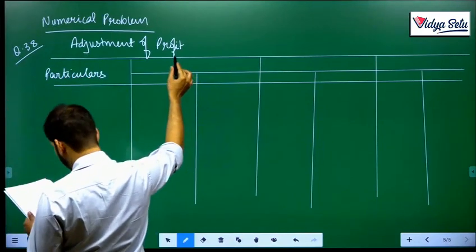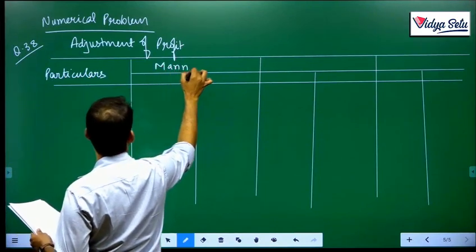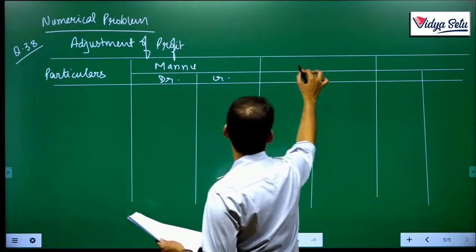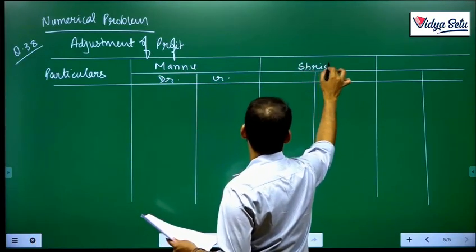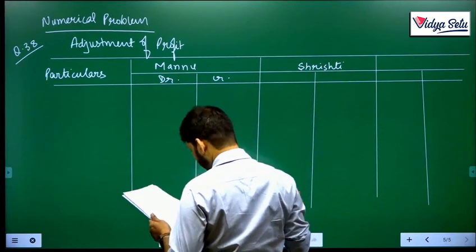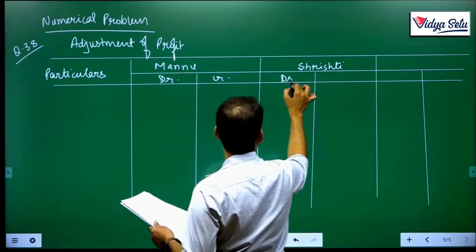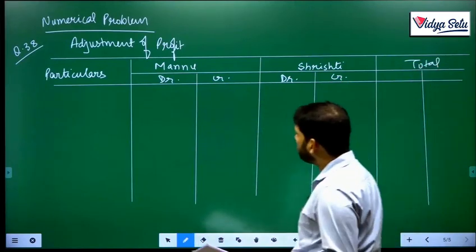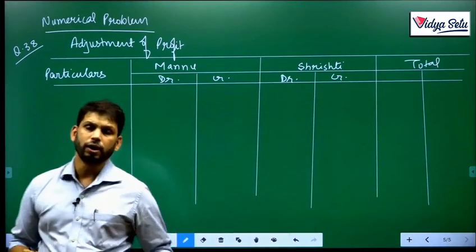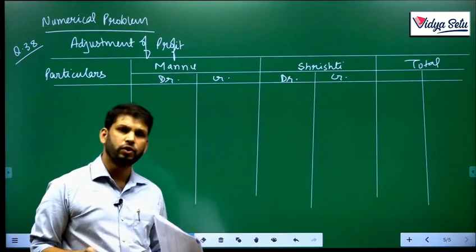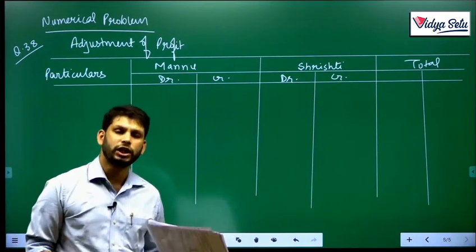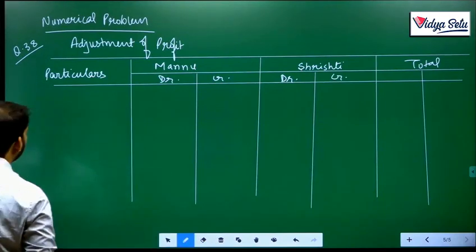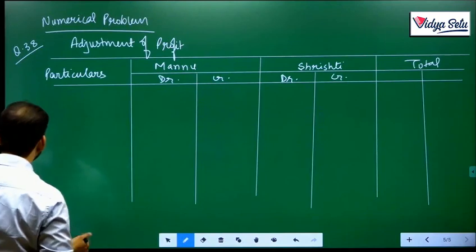Srishti, Manu, Srishti. Now, first thing first, because we do not know the profit - the 5,000 profit we do know, but we do not know in which ratio it was divided. So we will not take it in consideration. What we will do is we will first of all take in consideration interest on capital.